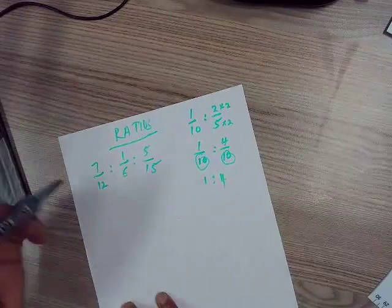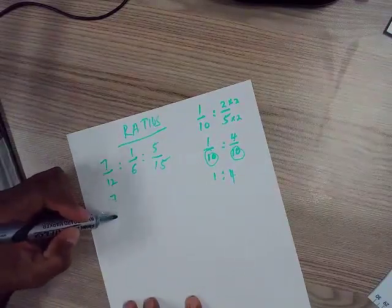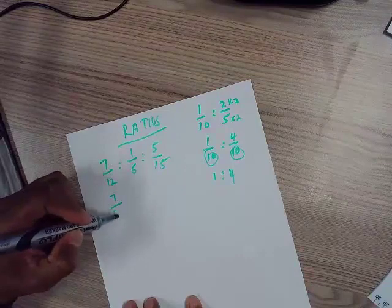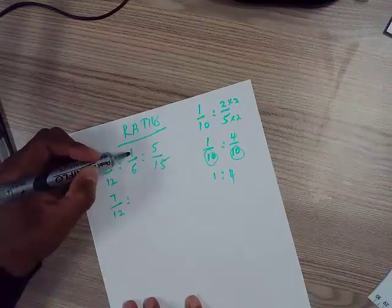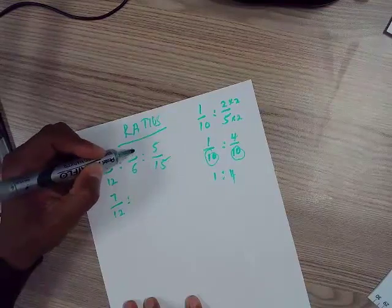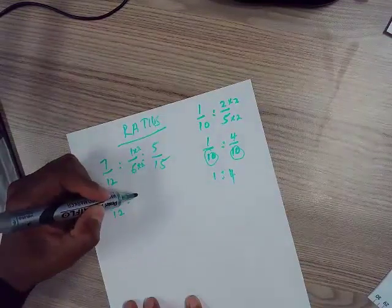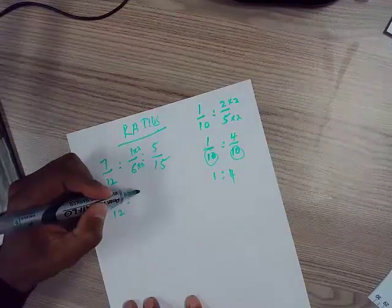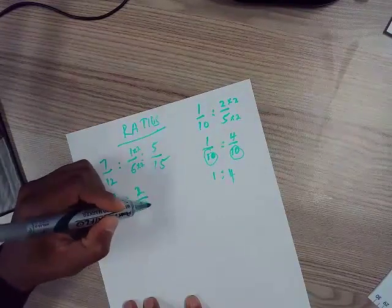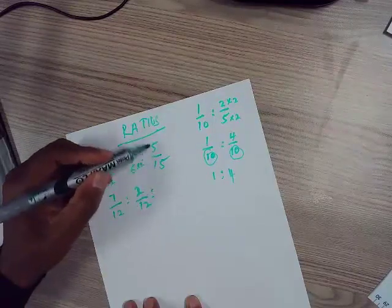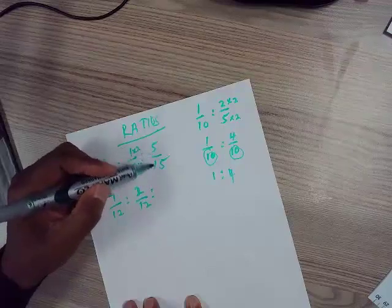So basically, seven over twelve, you can multiply one times two, six times two, and you will get two divided by twelve. What about this one? What about five and fifteen? Simplify it first before you try to convert to twelve.